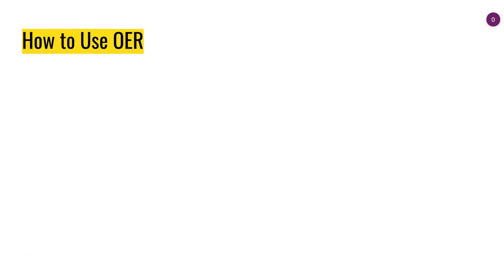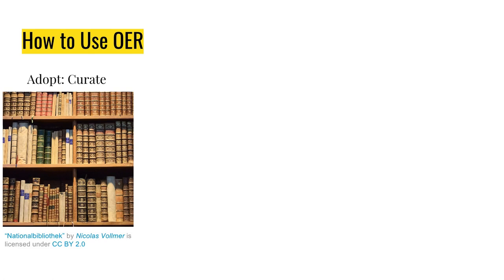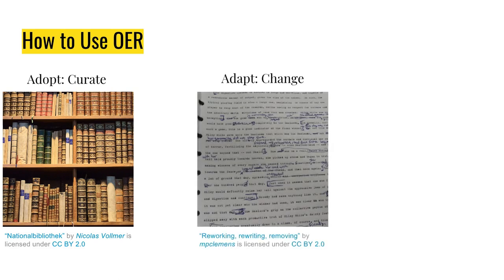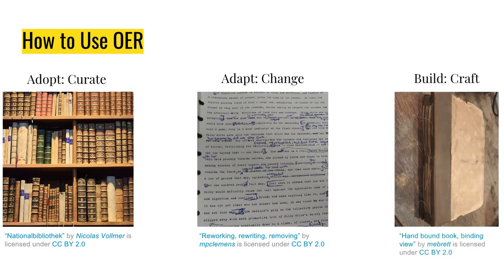So how might you go about using OER? There are several strategies to consider. The first strategy is Adopt — you curate content into your lessons based on what's out there: a video here, a podcast there, a slide deck from somewhere else. The second strategy is Adapt — you take content that's out there and augment it, maybe directly adding material or splicing interesting content together. The third strategy is Build — builders craft course content from their own vision and expertise, perhaps creating an entire textbook, podcast series, or mini-lecture videos for students.